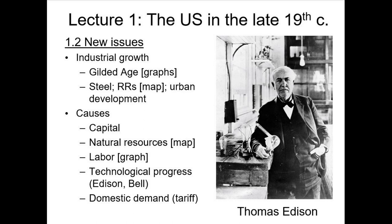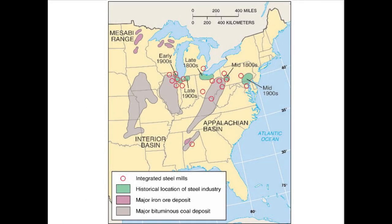What else do you need to produce goods? Natural resources. This is the era of steel, which requires coal and iron, and you also need coal to make steam-powered engines. At that point it's largely a matter of luck — do you have it or not? As it happened, the United States had a lot of natural resources: coal mines, iron mines, copper, oil — you name it. All the basic ingredients for industrial takeoff were found in the US.